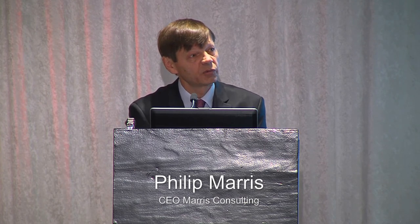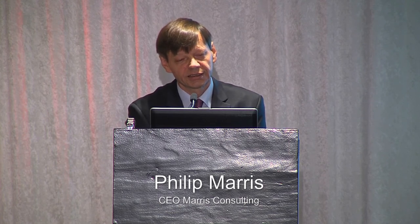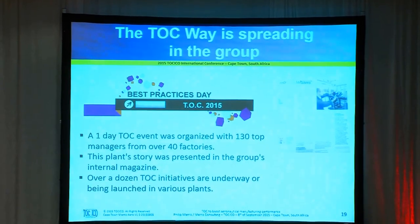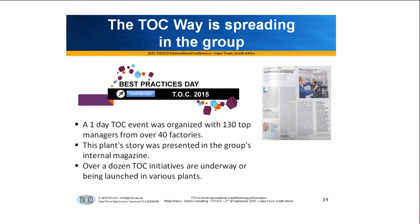So within four months, the worst factory in a group of 5 billion and 60 factories became the best — which surprised top management after everything they'd done. They decided to have an official group-wide Theory of Constraints Day with 130 of the top managers from 40 of the 60 factories. I said to them: you have 5 billion euros in work-in-progress in your group. Let's reduce it by 50% this year — that would add 2.5 billion euro to your results. At least a dozen TOC initiatives have now been launched throughout the group.